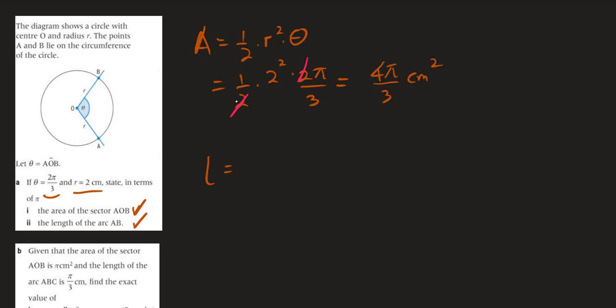To answer part II, we need to remember the formula: the length of arc AB equals R times theta. It equals 2 times theta, which is 2π/3, so it equals 4π/3 centimeters.